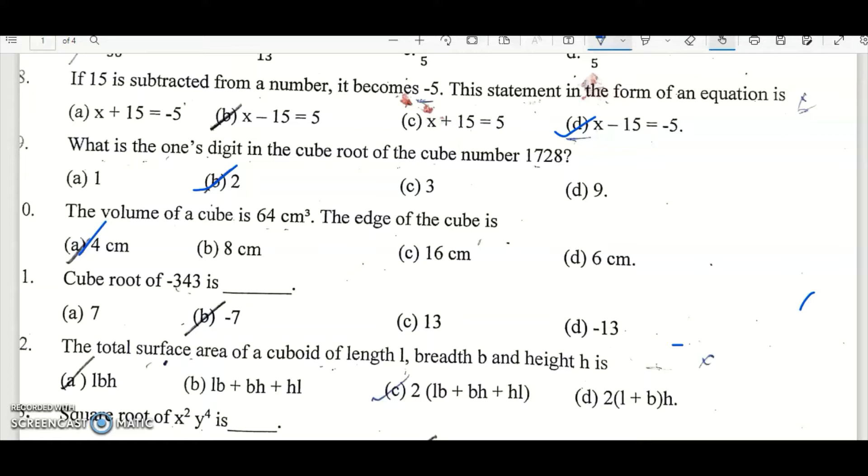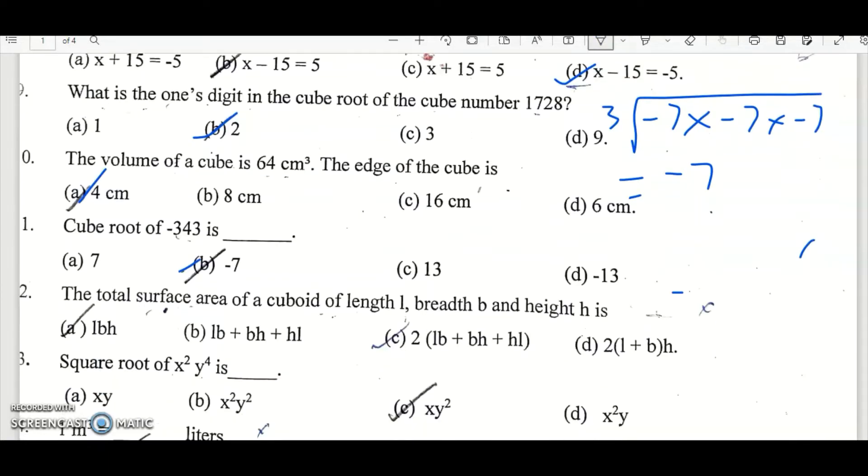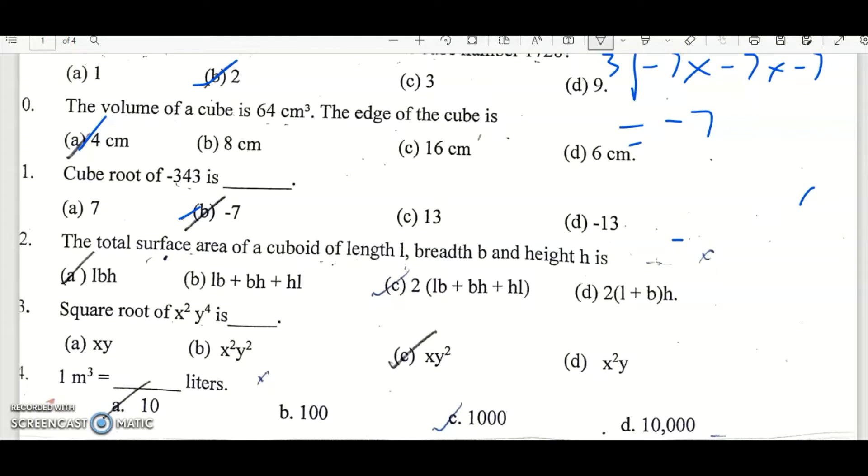The cube root of minus 343 is option B, minus 7. Minus 7 into minus 7 into minus 7 cube root equal to minus 7. The total surface area of a cuboid of length L, breadth B, and height H is option C, 2LB plus BH plus HL.